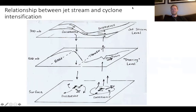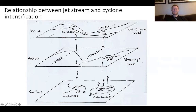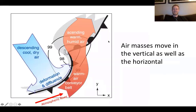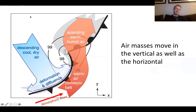In a weather 101 class you would spend a couple days just on this — it's at the heart of meteorology. The jet stream and the high and low pressure centers are connected; air masses move both vertically and horizontally. There's a warm air conveyor belt that ascends over the warm front — ascending air creates clouds and precipitation. Meanwhile, the cool dry air descends and deforms in a process called difluence.